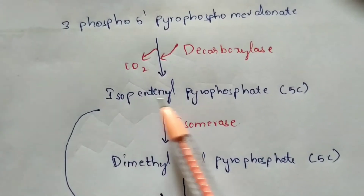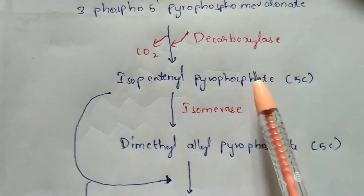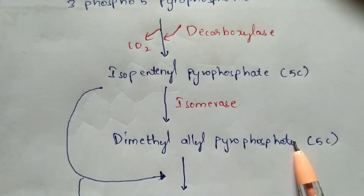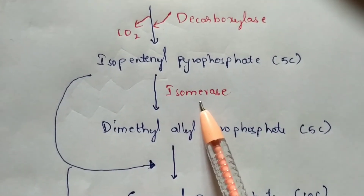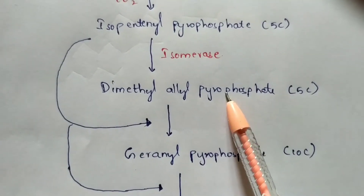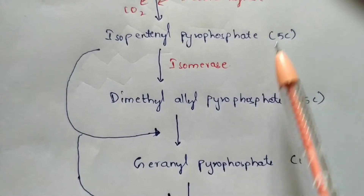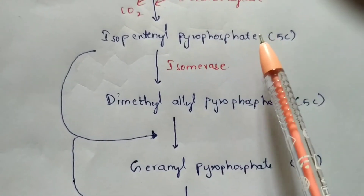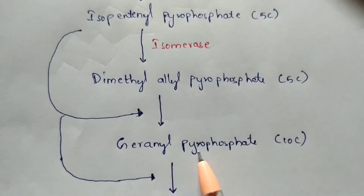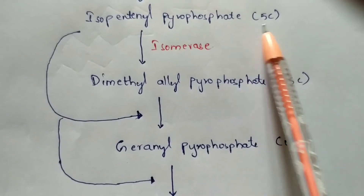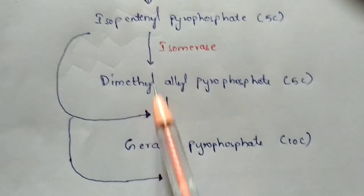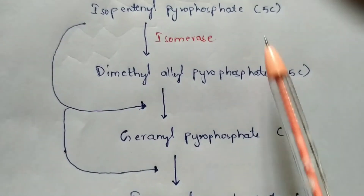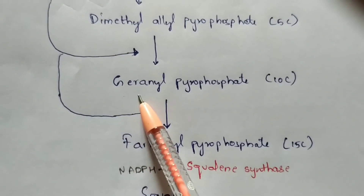Isopentenyl pyrophosphate (IPP), a 5-carbon compound, undergoes a reaction to form dimethylallyl pyrophosphate (DMAPP), also a 5-carbon compound. The enzyme utilized here is isomerase. Then DMAPP and IPP combine — 5 carbons plus 5 carbons — to form geranyl pyrophosphate, a 10-carbon compound.